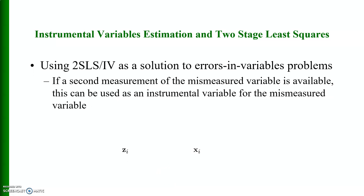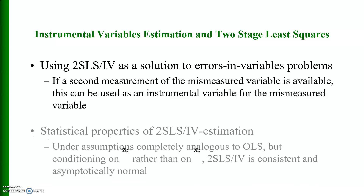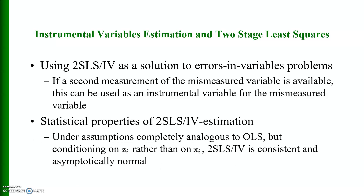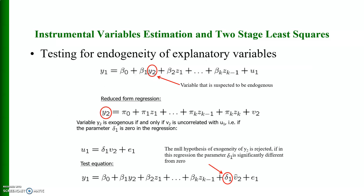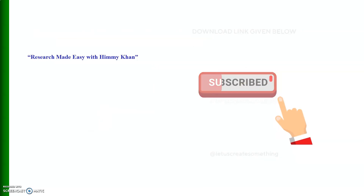Using 2SLS as a solution to errors-in-variables problems: if a second measurement of the mismeasured variable is available, it can be used as an instrumental variable. Statistical properties of 2SLS are completely analogous to OLS but conditioning on z_i rather than x_i. Two-stage least squares is consistent and asymptotically normal, but typically much less precise due to more multicollinearity and less explanatory variation in the second stage. Corrections for heteroscedasticity and serial correlation analogous to OLS apply, and 2SLS easily extends to time series and panel data. Testing for endogeneity can also be done following this method.